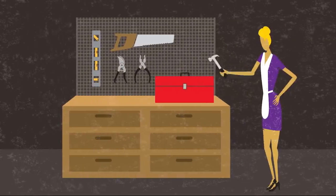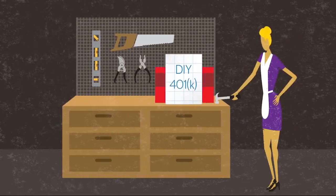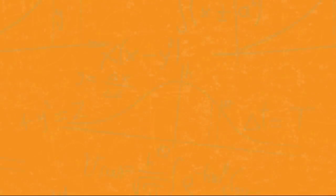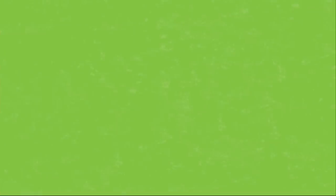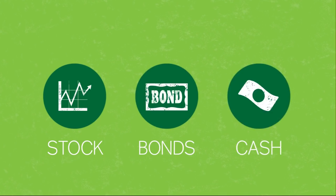And if you're the do-it-yourself type, you need to understand how to invest appropriately. Don't worry, we're not going to show you tons of math. All you need to know to get started is that there are three big types of investments called asset classes: stock, bonds, and cash.